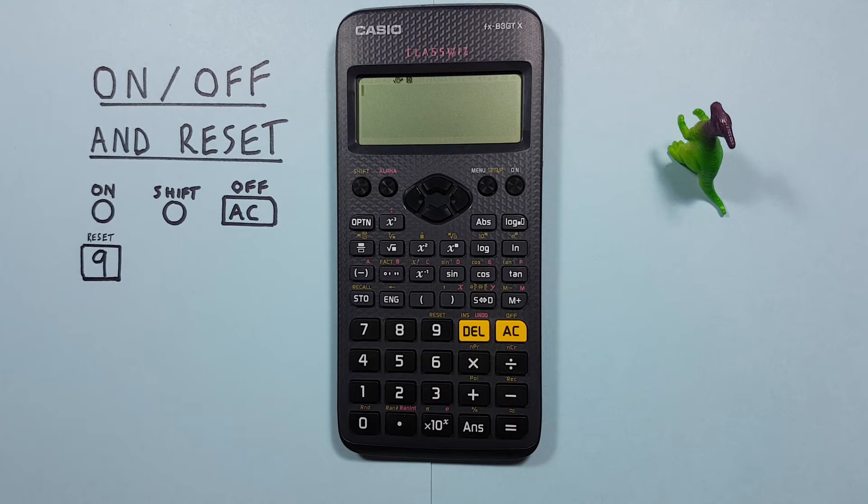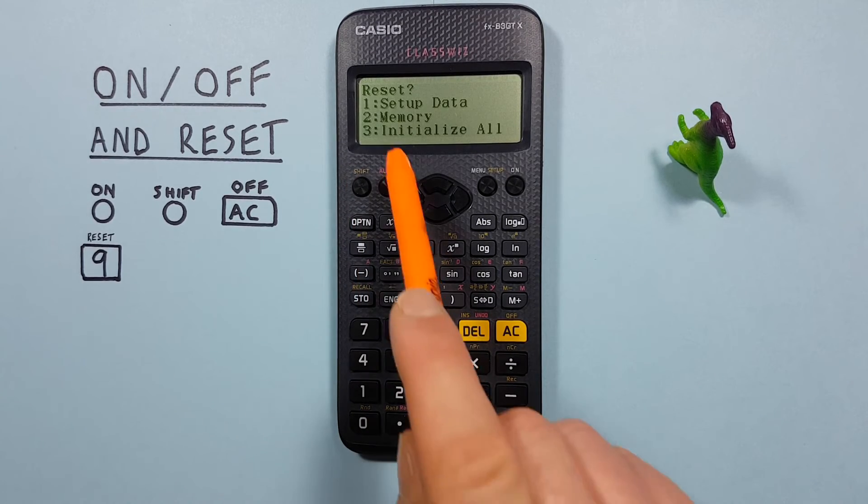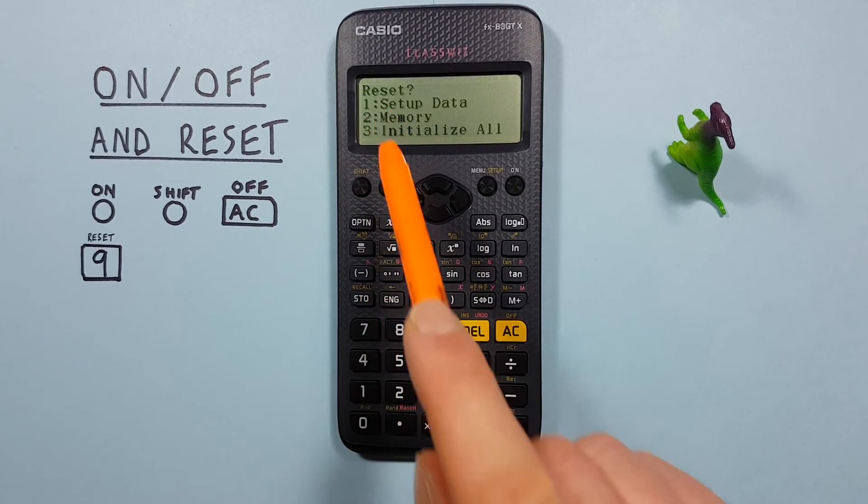If instead of going through all of those to reset them individually, we want to reset all of our memory, again we go SHIFT, 9, and select number 2, the memory.